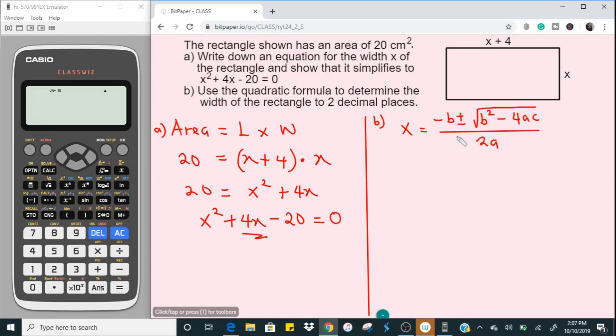Here, our a coming from this quadratic equation is actually 1, and b is positive 4, and c here is negative 20. It's important that you write down this, but this helps you to work this out very easily. Alright, so we're going to substitute the values for a, b, c into this quadratic formula.